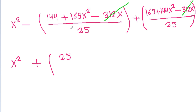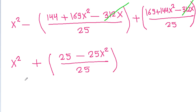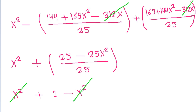Simplifying further: x² + 25/25 - 25x²/25 = x² + 1 - x² = 1. The x² terms cancel and we get 1 as the required answer.